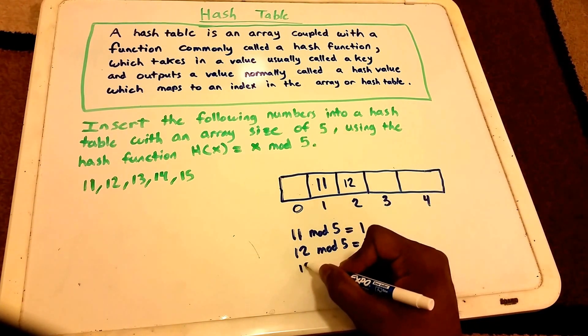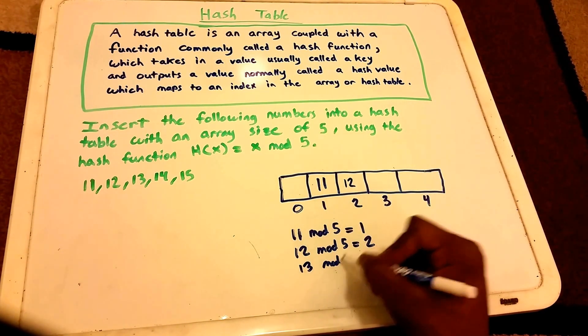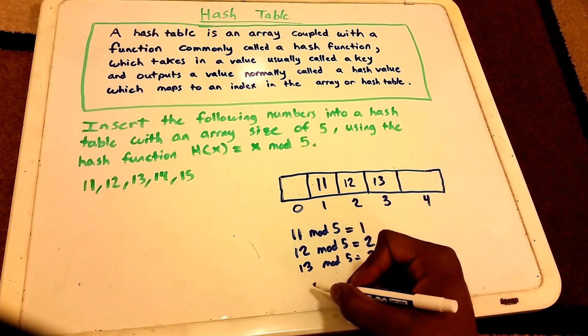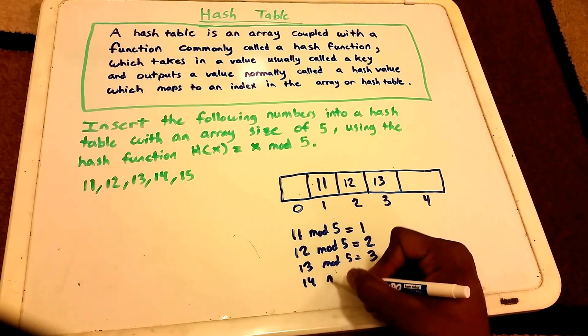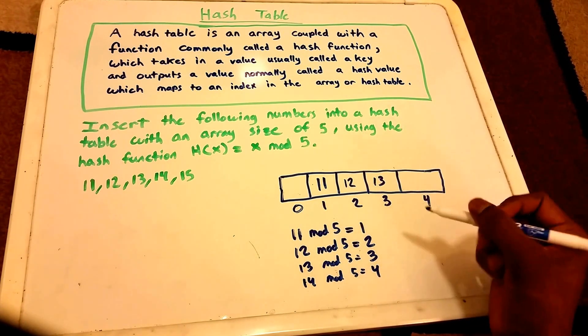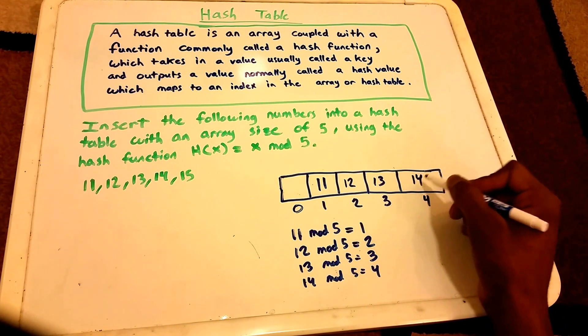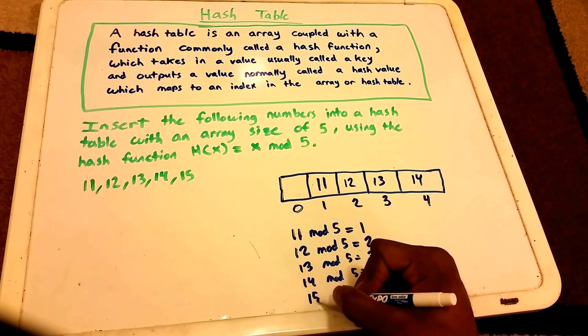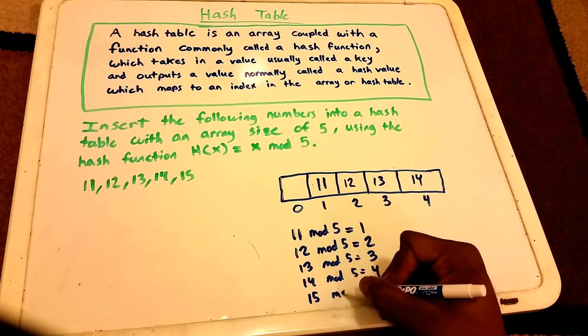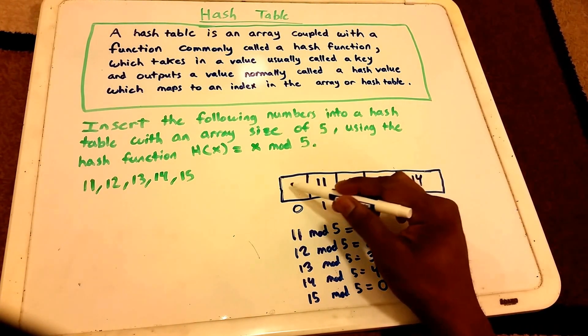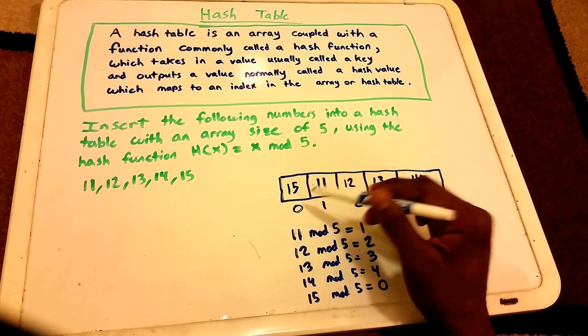We continue this trend with 13 mod 5, which gives us 3, so we put 13 at index 3. Then 14 mod 5 gives us the hash value 4, and we put 14 at index 4. Then 15 mod 5 gives us 0, so we put the value 15 at index 0.